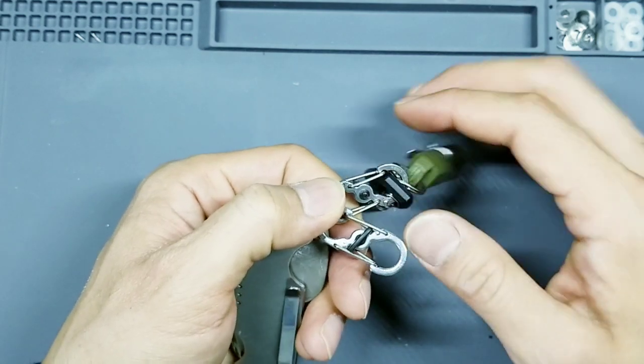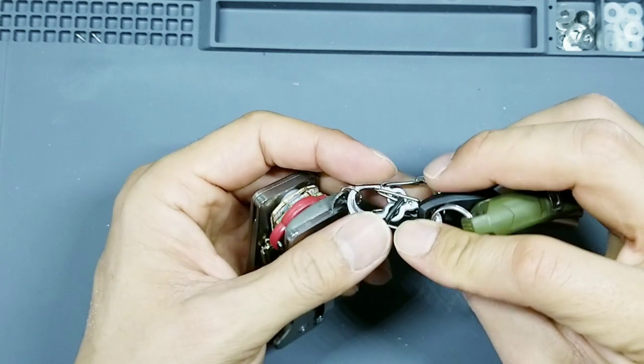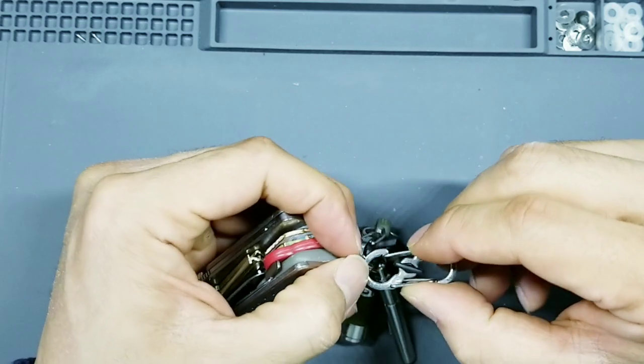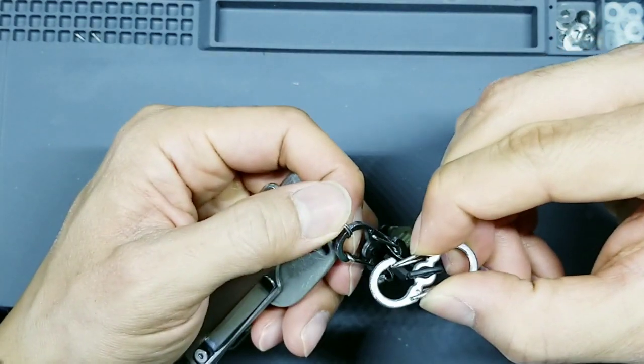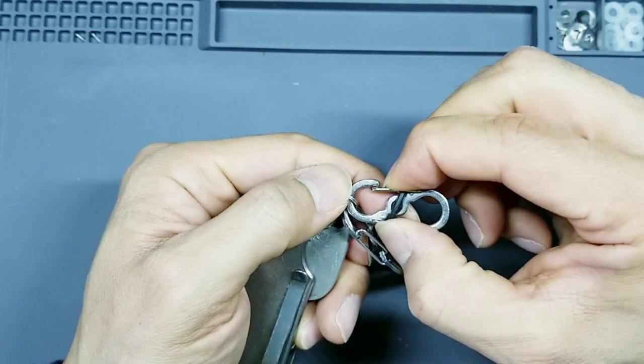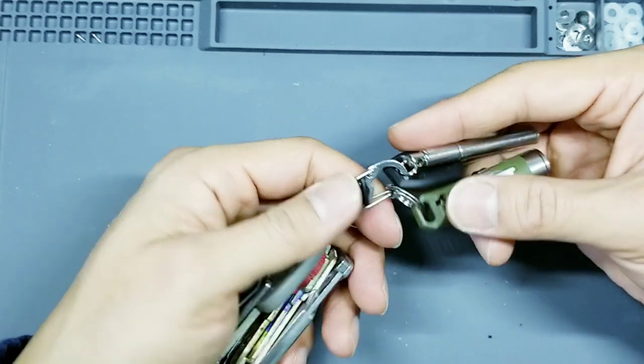And then attached to these, I put these Night Eyes locking S-biners. A locking S-biner basically is like a carabiner, so easy to remove like that. But it also incorporates a lock in here, so that way you can't open it accidentally in your pocket. A little bit added security.